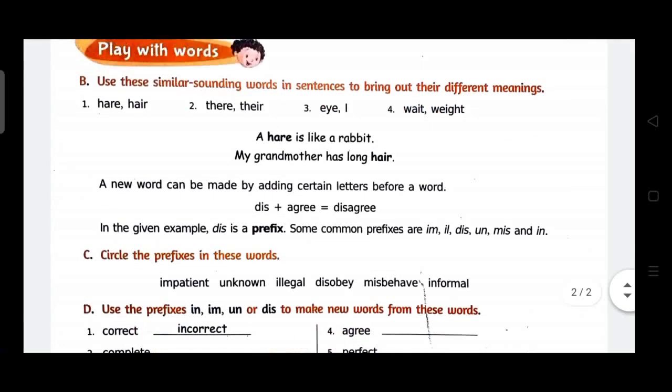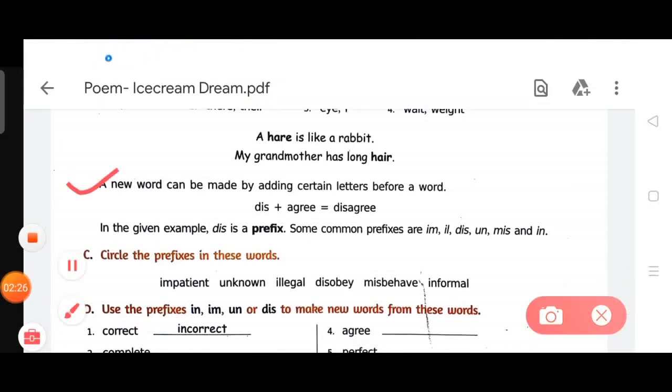Now look at next. A new word can be made by adding certain letters before a word. Dis plus agree is equal to disagree. In the given example, dis is a prefix. Some common prefixes are im, ill, dis, un, mis, and in.